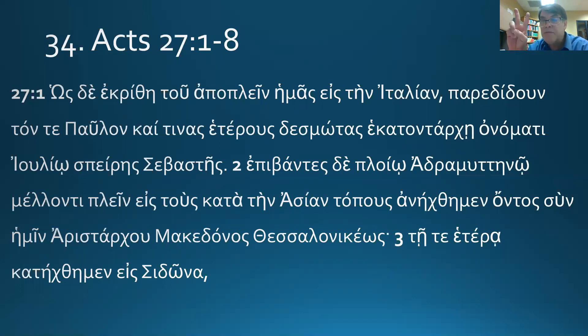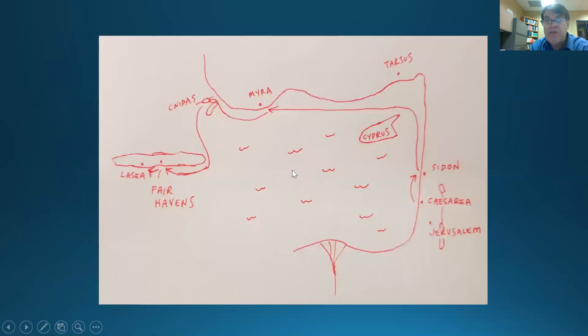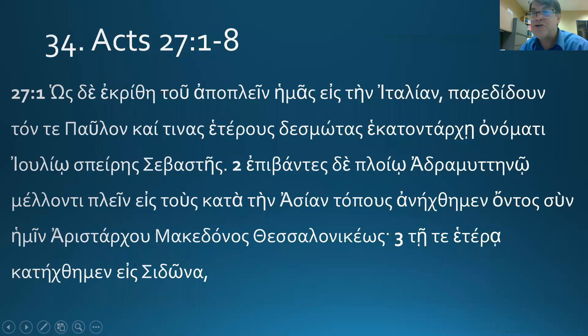Aristarchus being with us, a Macedonian of Thessalonica. So there are at least two friends with Paul. And on the different day, we were led down to Sidon. Again, notice how they do it. They think differently than I do. I think up north, south down, but they go down to Sidon in the way they think. Of course, they don't know the globe, most of them, I assume. So Paul, Aristarchus, and Luke get on a boat at Caesarea, and they go down to Sidon.